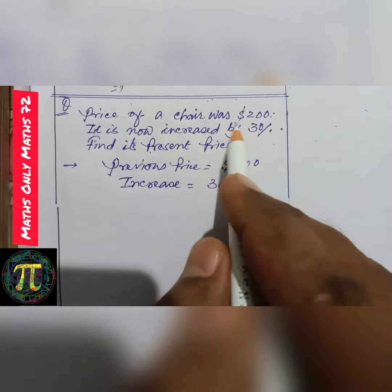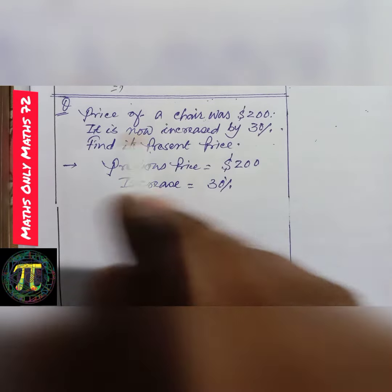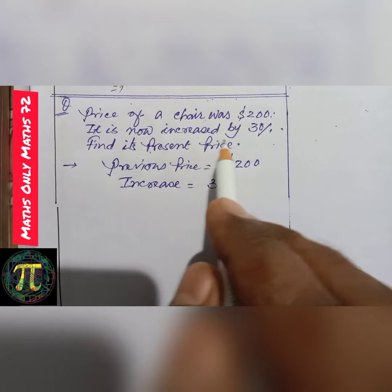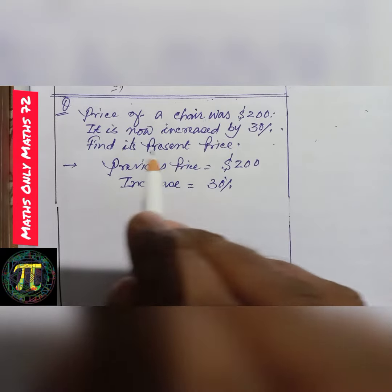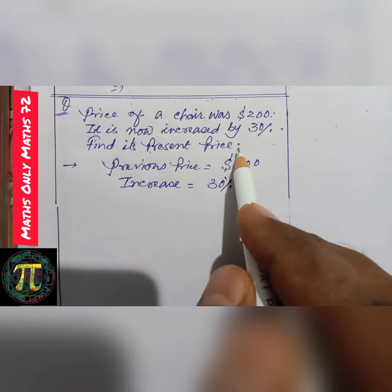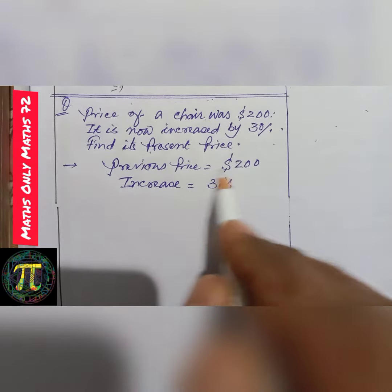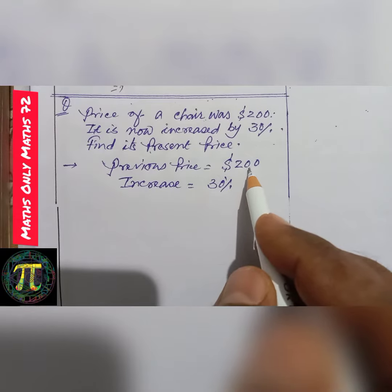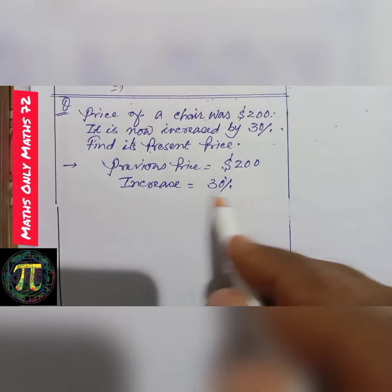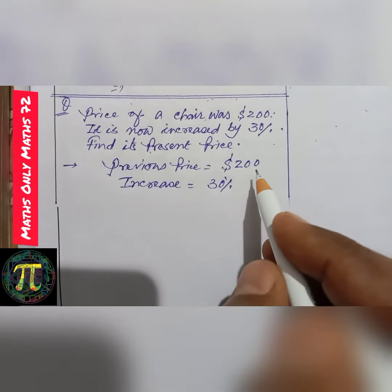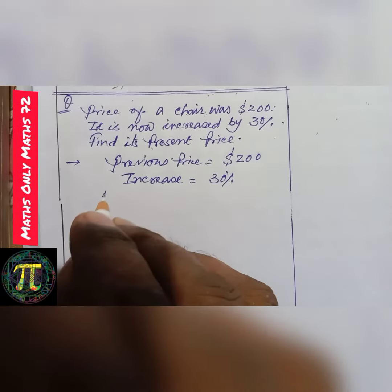The price of a chair was 200 dollars. It has now increased by 30 percent. Find its present price. The previous price was 200 dollars with an increase of 30 percent. If the price increases, then the new price is: